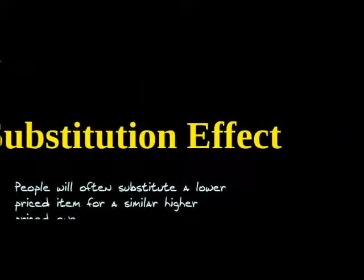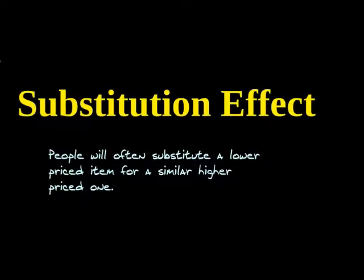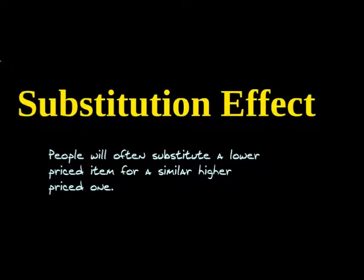The third reason is the substitution effect, which says that people will often substitute a lower-priced item for a similar higher-priced one. For example, when I go to the supermarket for my weekly groceries and I notice that chicken is on sale, I may buy less hamburger than I was planning on and buy more chicken instead if it's cheaper. Many products that are equivalent in our mind, or at least close to it, can be treated as substitutes. So when one price increases, we're going to buy less of that because we can buy a substitute instead.